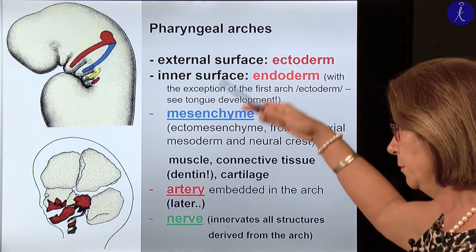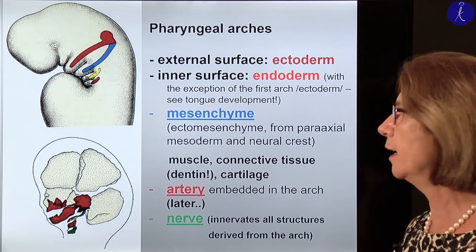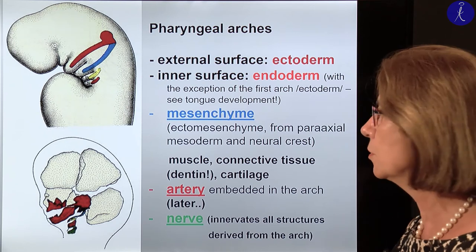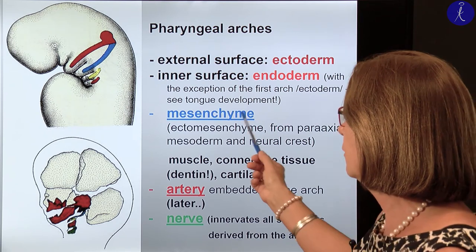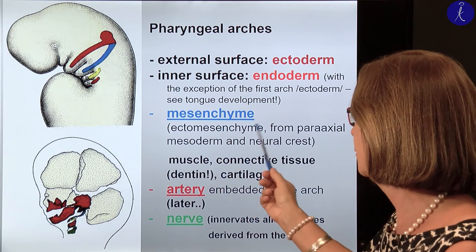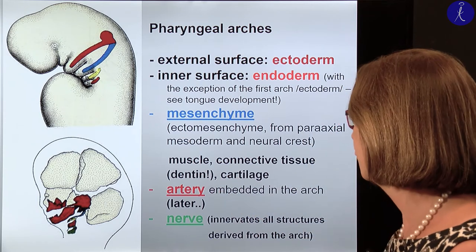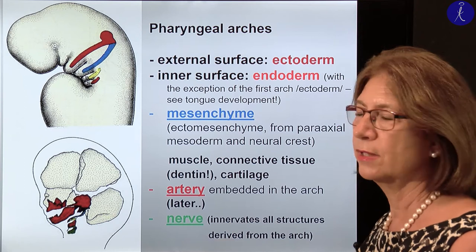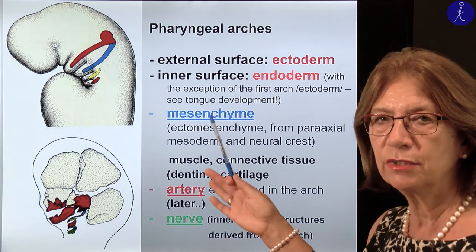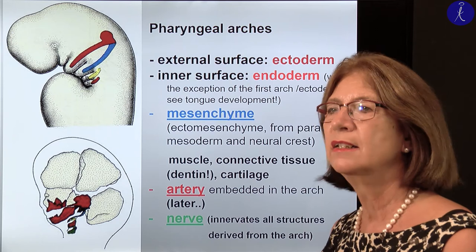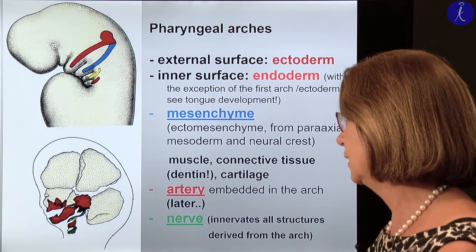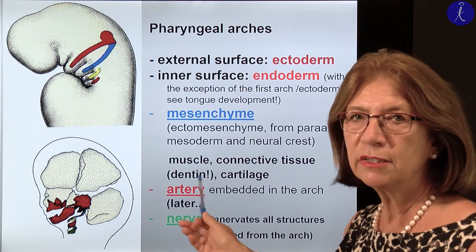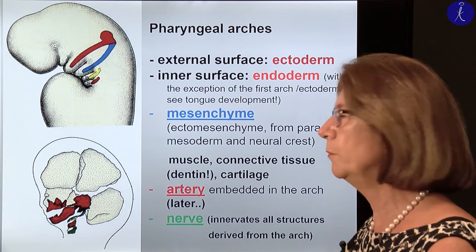General information: the external surface of the pharyngeal arches is covered by ectoderm, the inner surface by endoderm — with the exception of the inner surface of the first pharyngeal arch. They are filled with ectomesenchyme, partially from the paraxial mesoderm and from the neural crest. From this mesenchyme we will have muscles — also skeletal muscles, as the paraxial mesoderm will have myotome cells in this region — connective tissue, cartilage, and among others also dentine will develop from this ectomesenchyme.